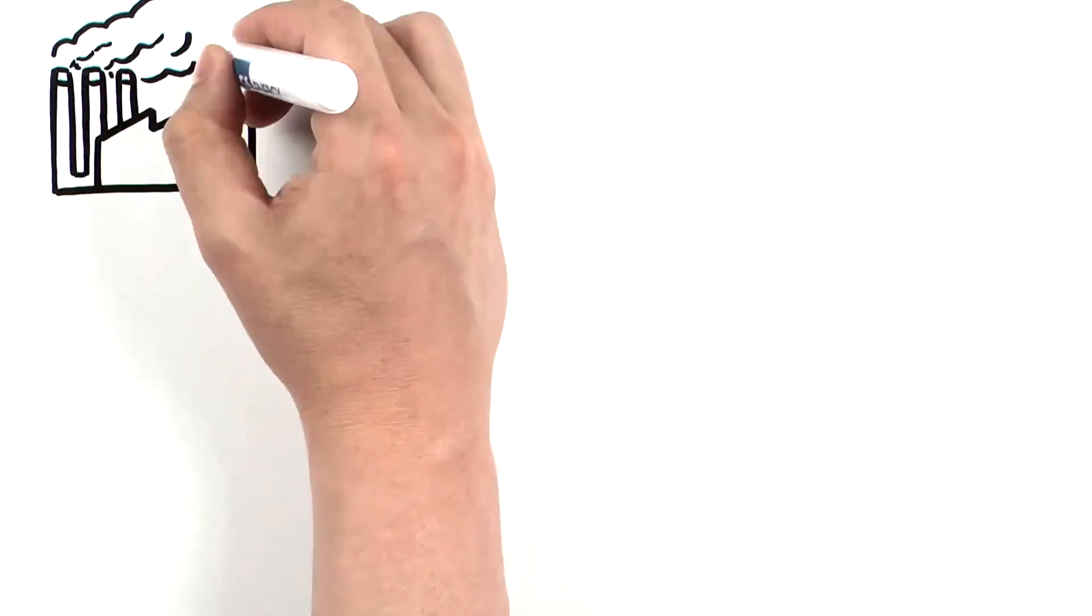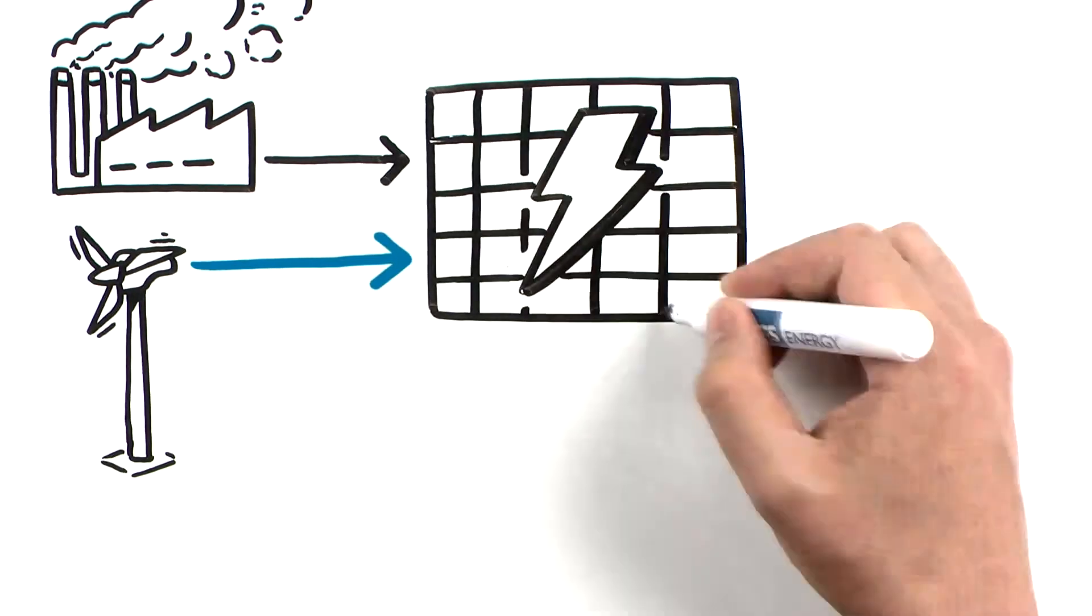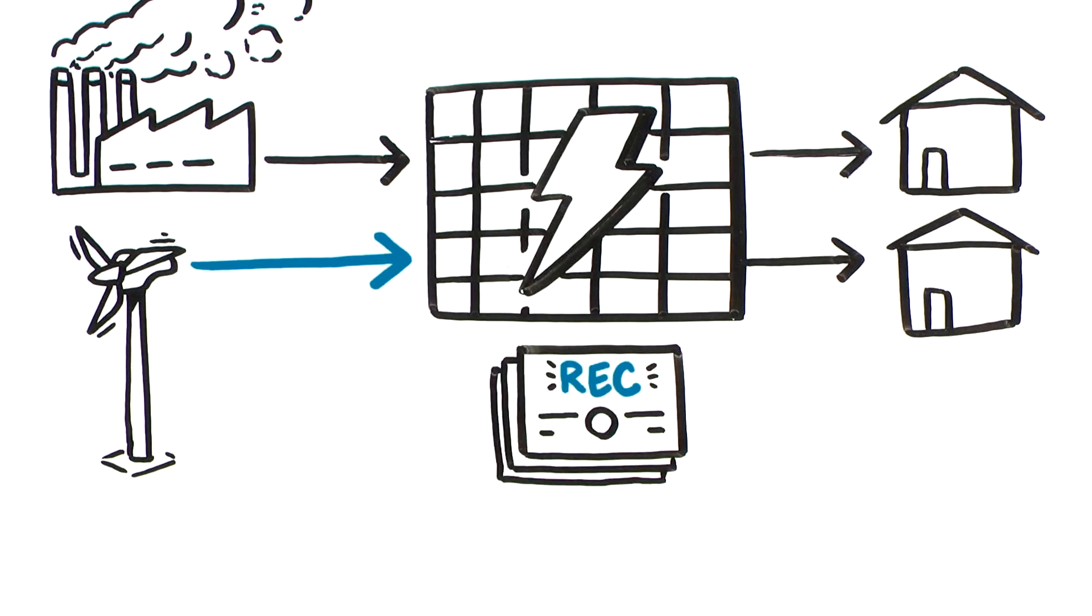We ensure power generated through renewable energy enters the grid by purchasing renewable energy credits, RECs. Purchasing RECs supports projects that reduce greenhouse gas emissions associated with the production of grid power.